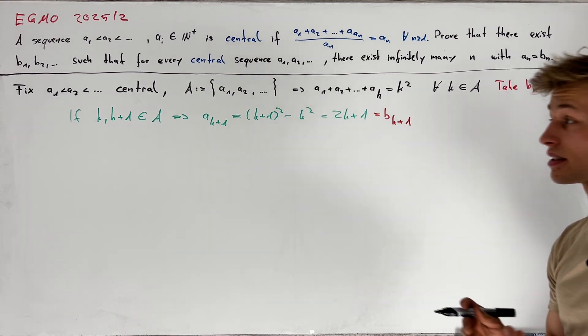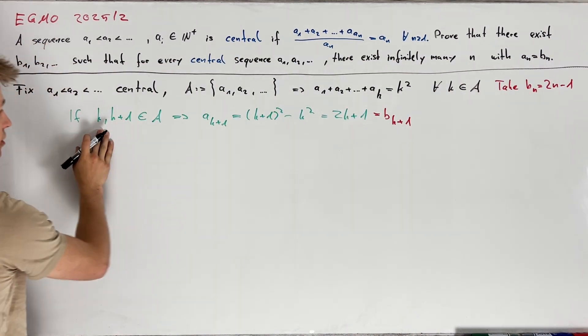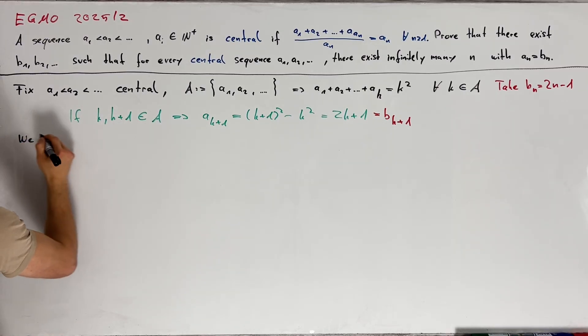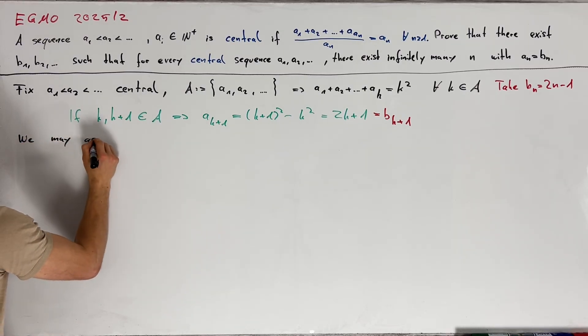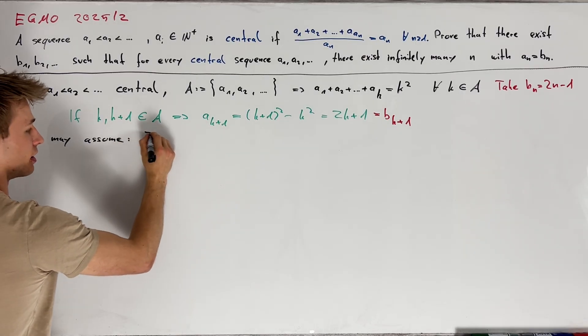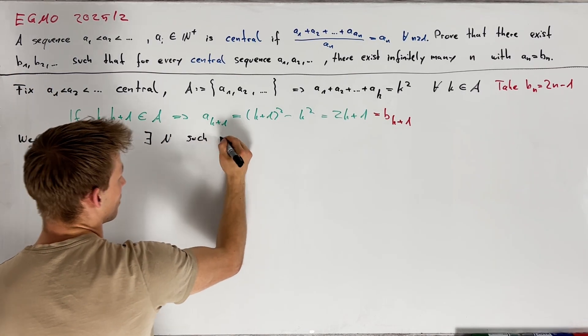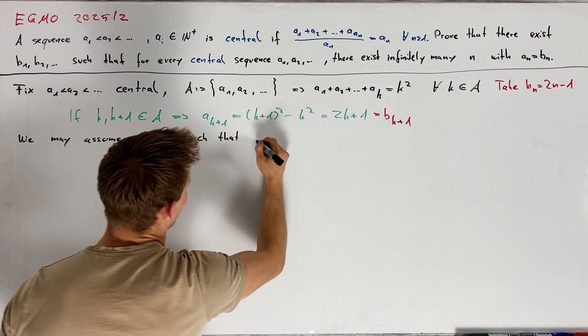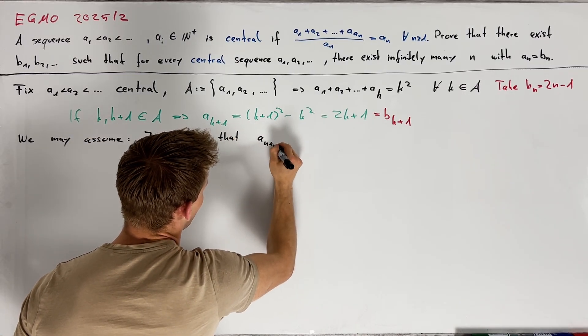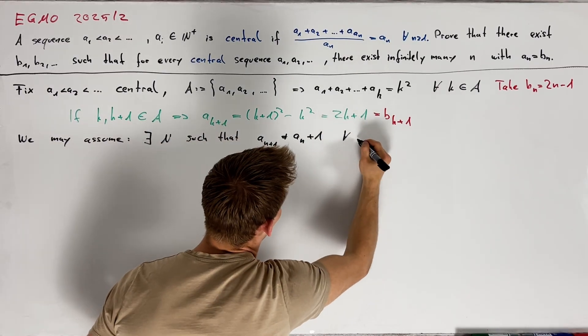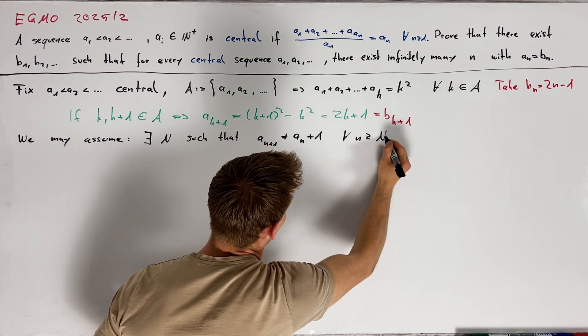In other words if we can find infinitely many pairs of consecutive integers in A we are done. And therefore from now on we may assume that this doesn't happen, so that there exists some capital N such that a_{n+1} is not equal to an plus 1 for all n greater than or equal to capital N.